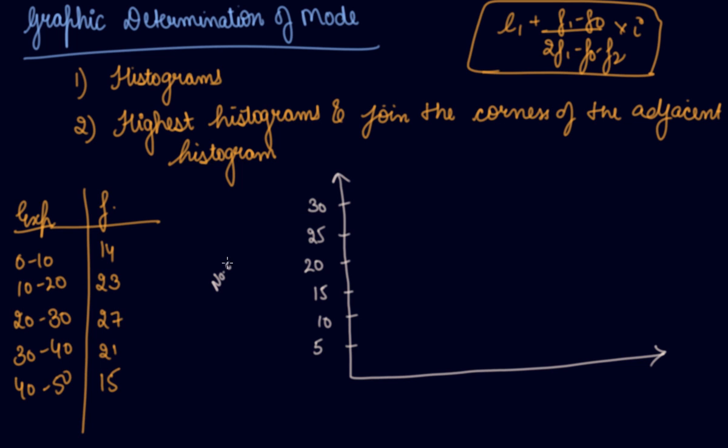On the x-axis, you will take expenditure, the variable or class, on a scale of 10: 0 to 10, 10 to 20, 20 to 30, 30 to 40, and 40 to 50.